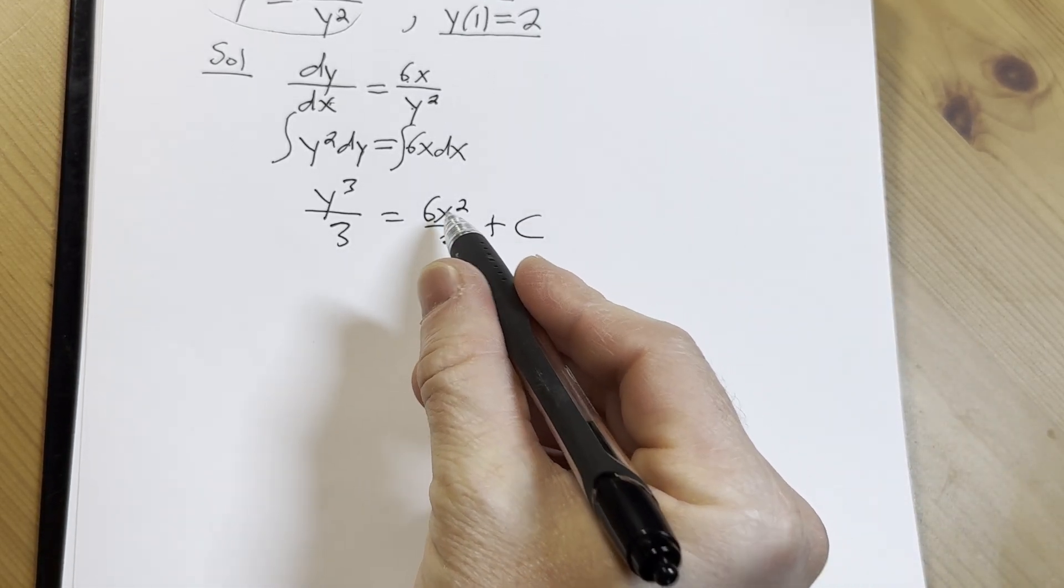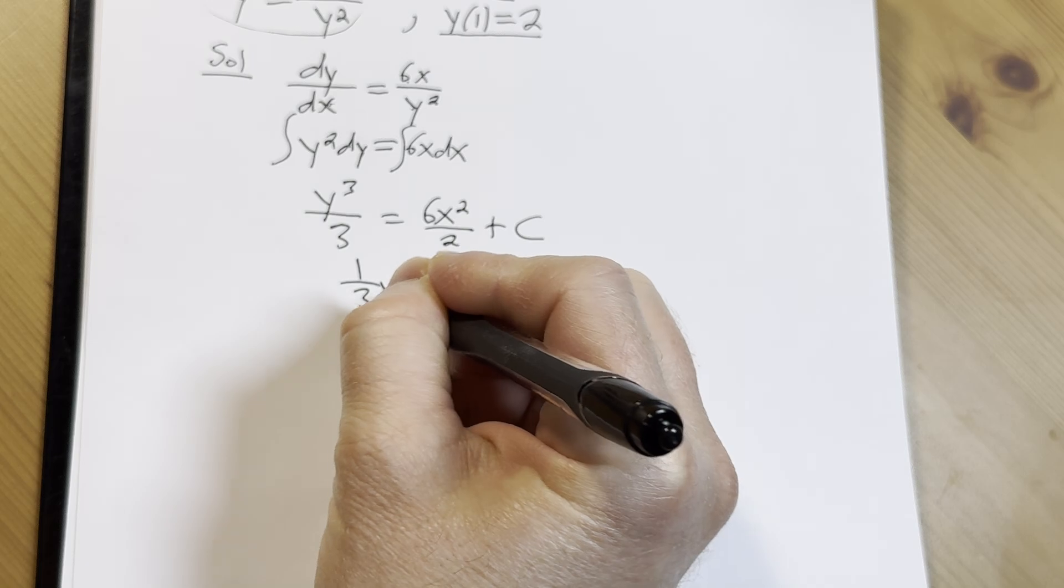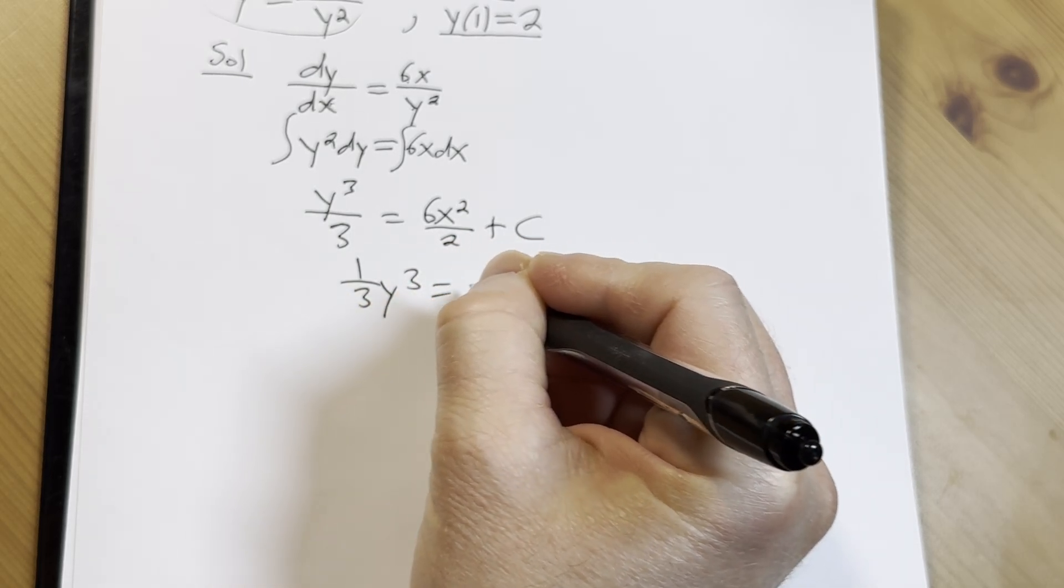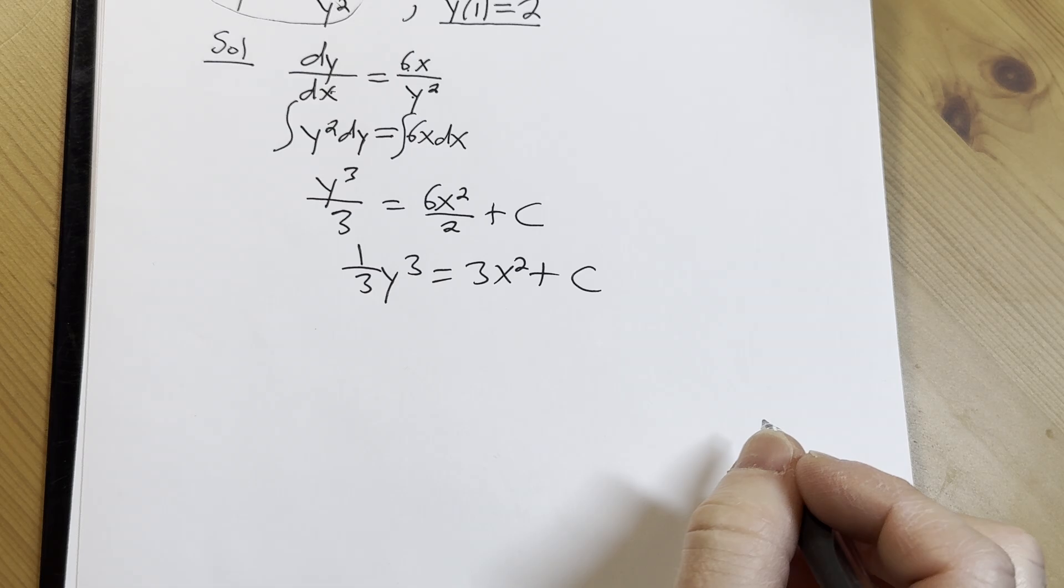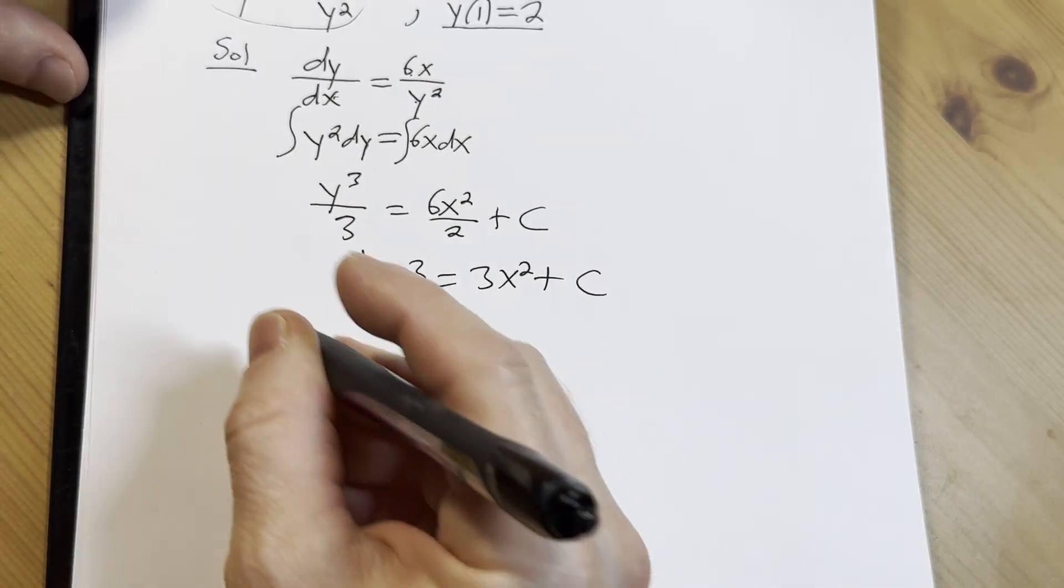2 goes into 6 three times, so we have 1 third y cubed equals 3x squared plus C. So now we need to use our initial condition. Our initial condition was y of 1 equals 2.